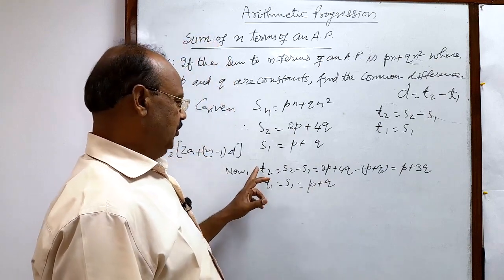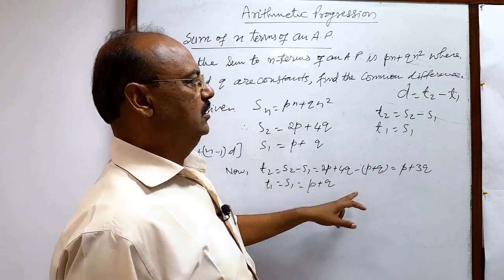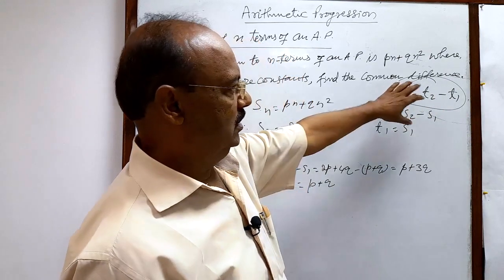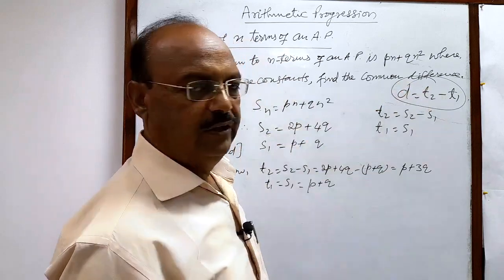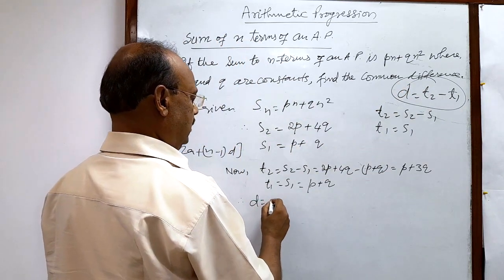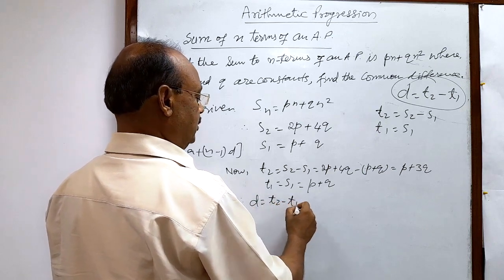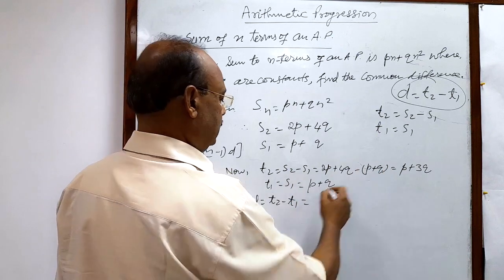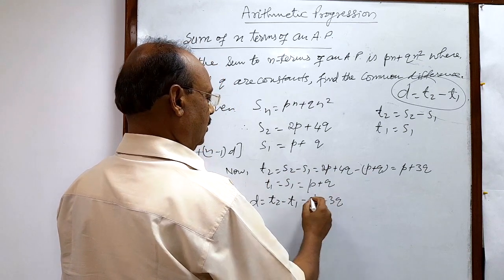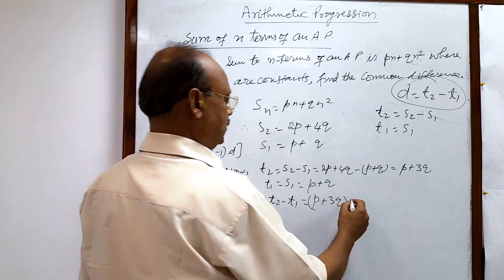We are getting value of t2 and t1 here. So we can with the help of this result, this formula, we can get value of d very easily. Therefore common difference d is equal to t2 minus t1, and t2 is p plus 3q and t1 is p plus q.